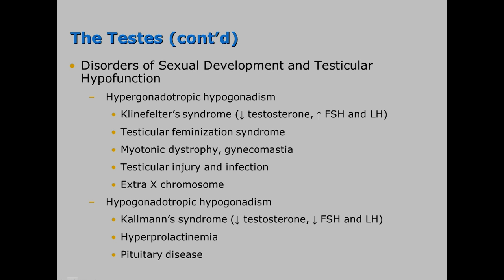The next disorder is hypogonadotropic hypogonadism, known as Kallmann's syndrome. With this, everything is decreased — low testosterone, low FSH and LH. In these patients we see hyperprolactinemia, which can cause lactation in males and is usually caused by a pituitary disorder.